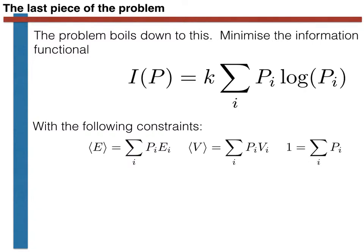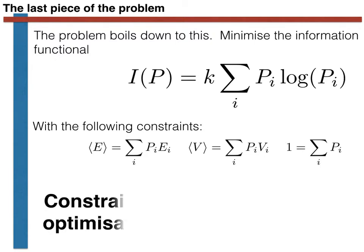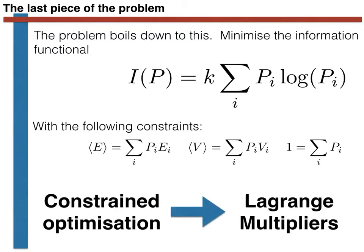With all this in mind, let's summarize the problem we have to solve. We have to minimize the information function shown at the top of this slide, subject to three constraints shown in the middle of the slide. The last constraint comes about because we are calculating a probability, and the sum of all elements in a probability distribution must equal one — a property of probability distributions. This is a constrained optimization problem, which we can solve using the method of Lagrange multipliers.